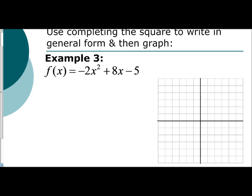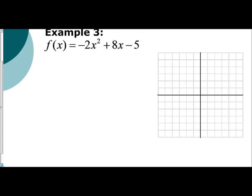I'm given f of x equals negative 2x squared plus 8x minus 5. Remember, if you're going to complete the square to get it in general form, you need to get the quadratic and linear term isolated. So I'm going to add 5 to the other side and change f of x to y. So we have y plus 5 equals negative 2x squared plus 8x.